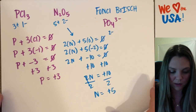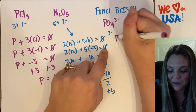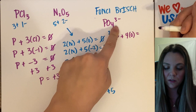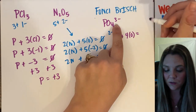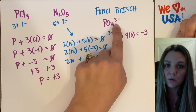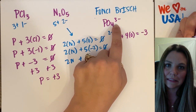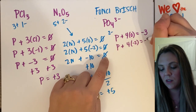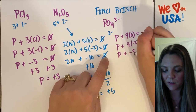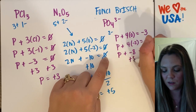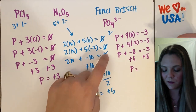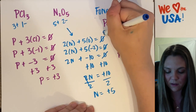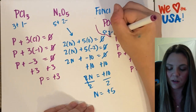For PO4³⁻: phosphorus plus four times oxygen is going to equal negative three — not zero, because it's a polyatomic ion, so it equals the charge of that polyatomic ion. Phosphorus plus four times negative two equals negative three. Phosphorus plus negative eight equals negative three, add eight to both sides, and phosphorus equals plus five.